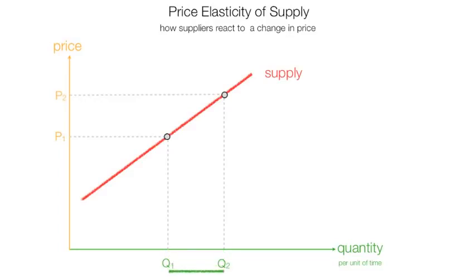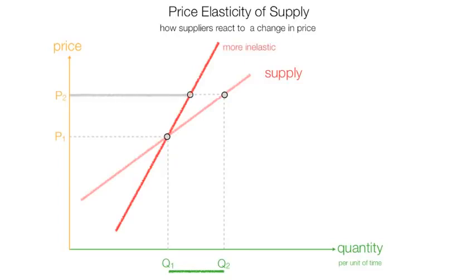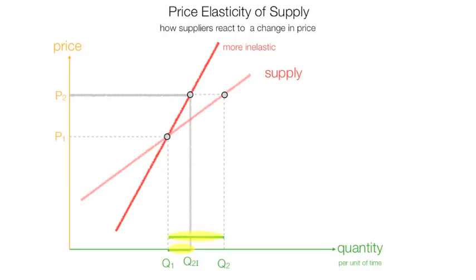Now I am going to make supply slightly more inelastic. At the exact same price, P2, there is less quantity supplied, which I label as Q2I for inelastic. When I compare these two quantities supplied, it is obvious that the more inelastic has less quantity supplied.